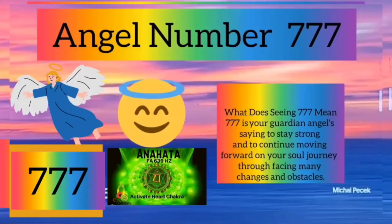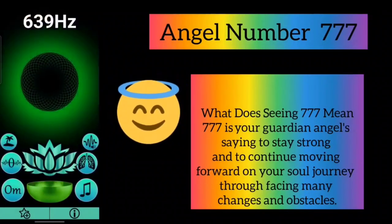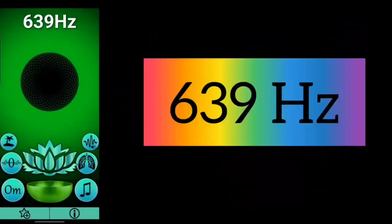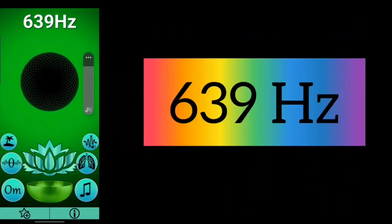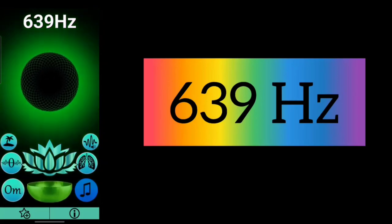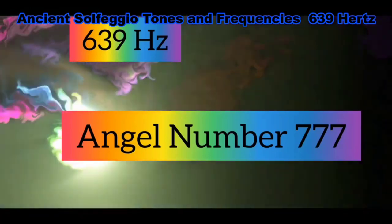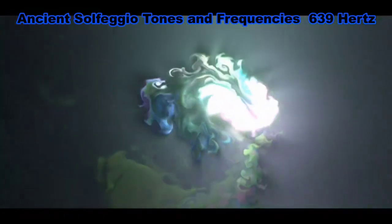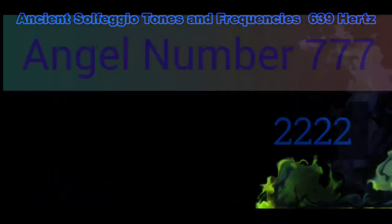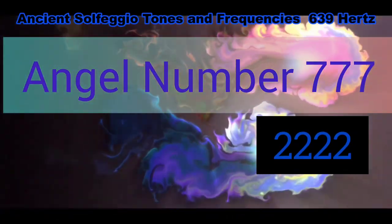Ancient solfeggio frequency and tone of 639 Hertz playing in the background with the visual stimulation of fluid design. This frequency enables the creation of harmonious community and harmonious interpersonal relationships. 639 Hertz is known for its positive effects on the heart chakra. It is the frequency which balances the heart chakra and also heals it. This ancient solfeggio frequency enhances communication, understanding, tolerance, and love.